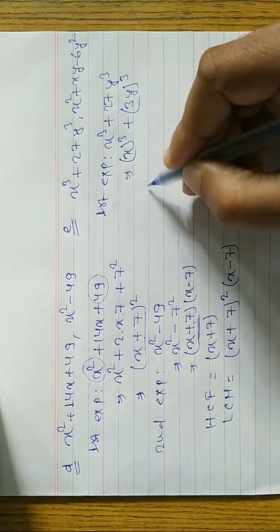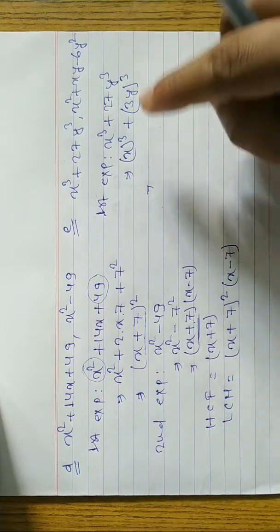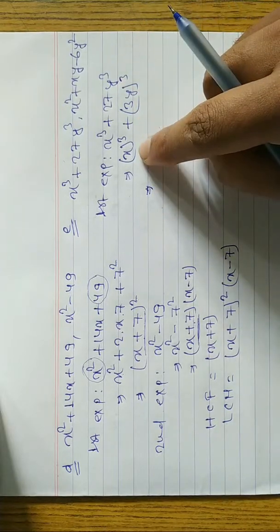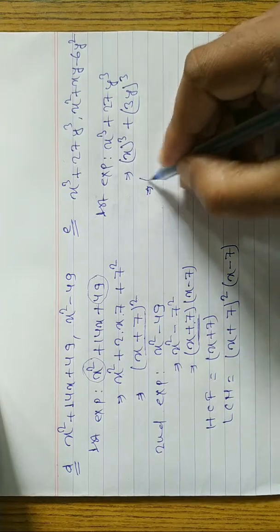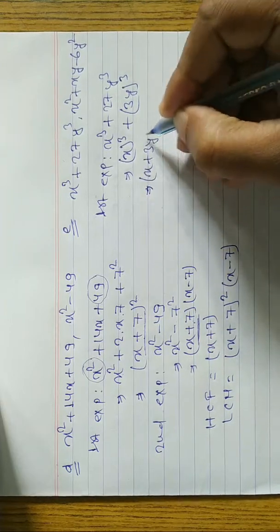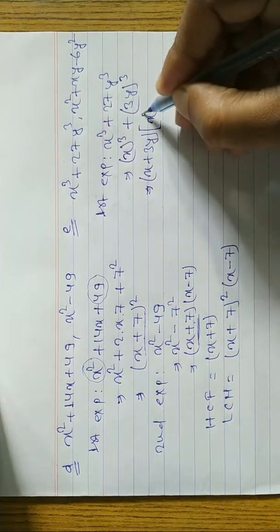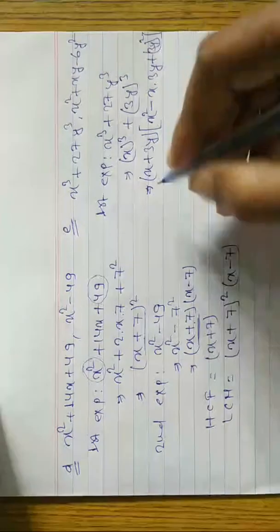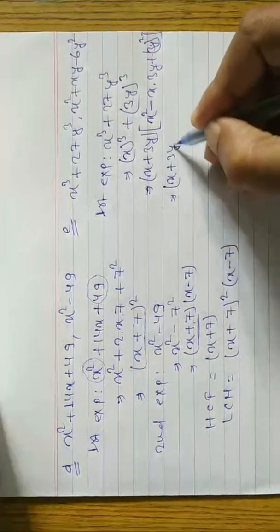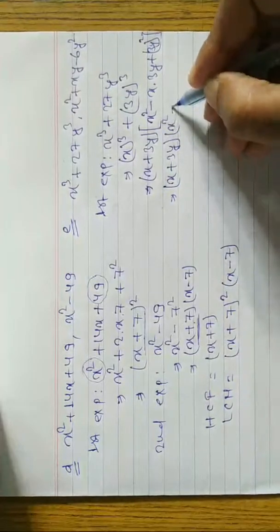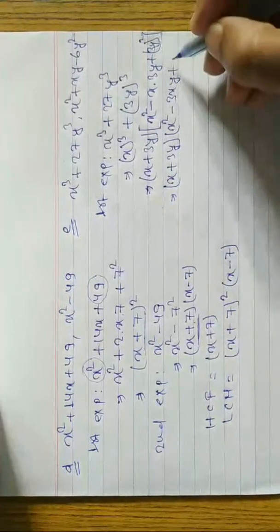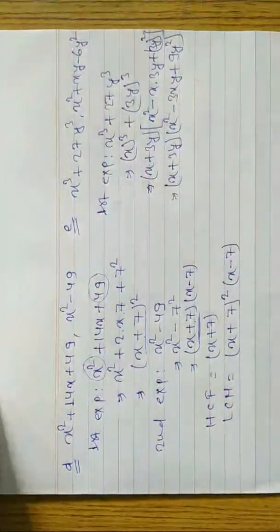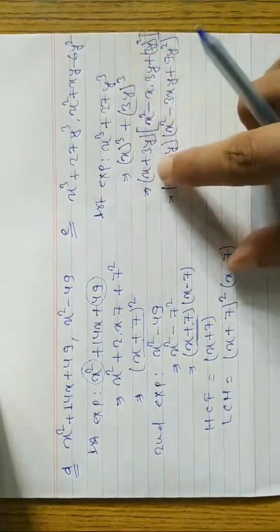With a = x and b = 3y, we can write (x + 3y)(x² - 3xy + 9y²), since b² = (3y)² = 9y². So the first expression factorizes to (x + 3y)(x² - 3xy + 9y²) using the formula for a³ + b³ = (a + b)(a² - ab + b²).